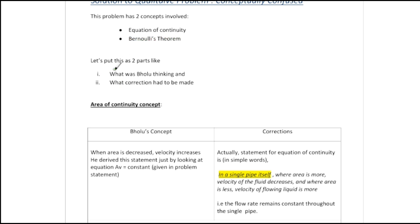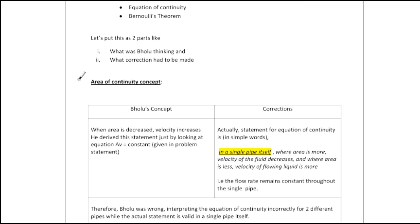Let's put this as two parts — what was Bholu thinking according to him, and what corrections have to be made. First we will discuss the continuity concept. Here is Bholu's concept: when area is decreased, velocity increases — he derived this statement just by looking at the equation Av = constant.